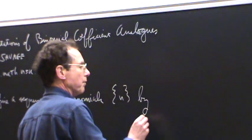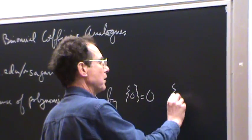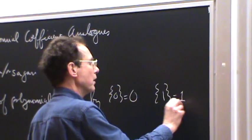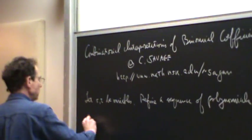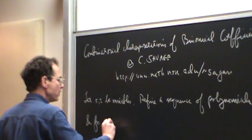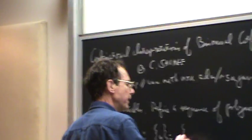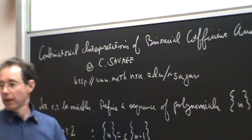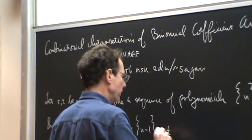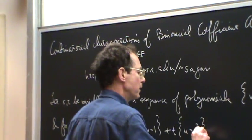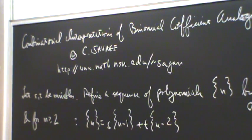And you do it in a very simple way. You start off: the 0th polynomial is 0, the first polynomial is 1. And then for any further value, you get the nth polynomial by taking the (n-1)st polynomial, multiplying by my variable s and adding to it t times the one just before. Okay, so that's going to give you some sequence of polynomials.